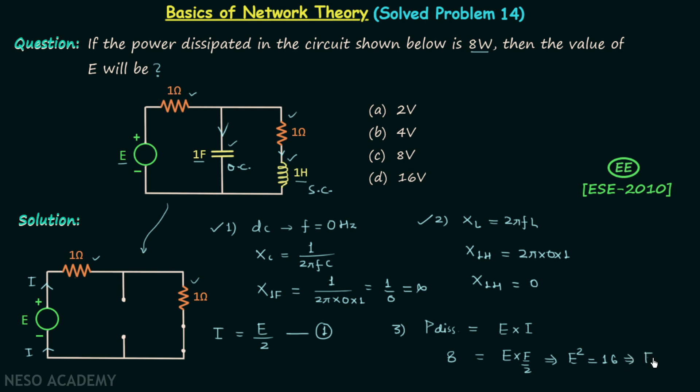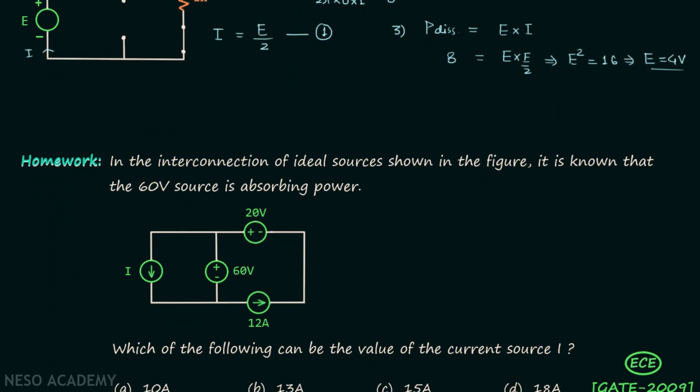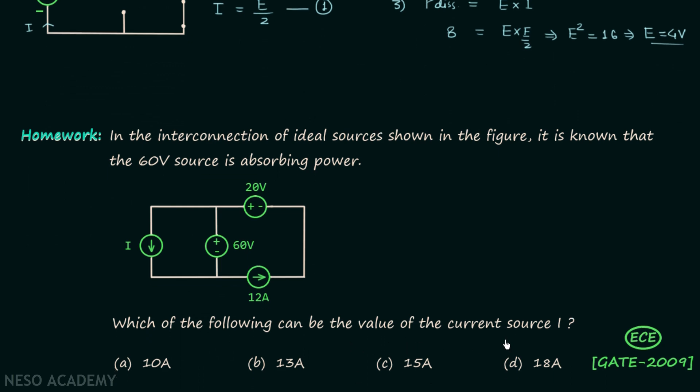Therefore we can say that the voltage E is equal to 4 volts, and hence option B is the correct option. So I hope the explanation was clear to you. Now we will move on to our homework problem. In the homework problem, you are required to find the value of current source I. The problem is from GATE 2009 ECE paper. Try to solve the problem and once you have your answer, post it in the comment section.